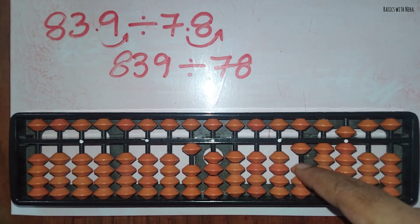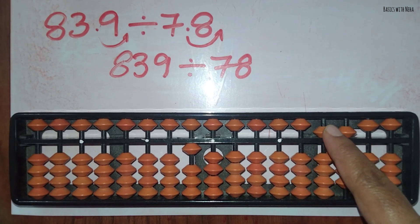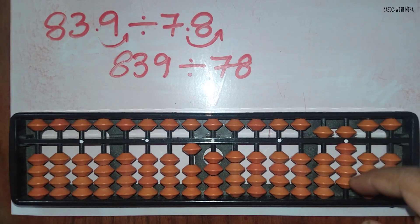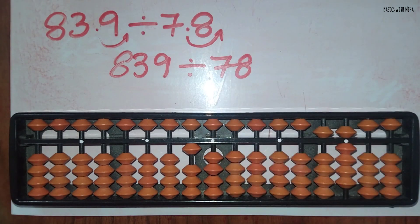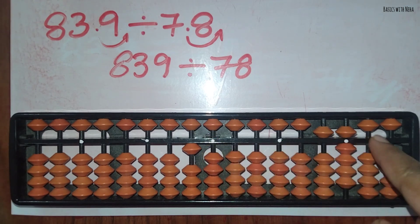Now it is 59, but 59 is smaller than 78, so we are going to put a zero. We are going to leave this and consider a decimal place. We are going to include 590.